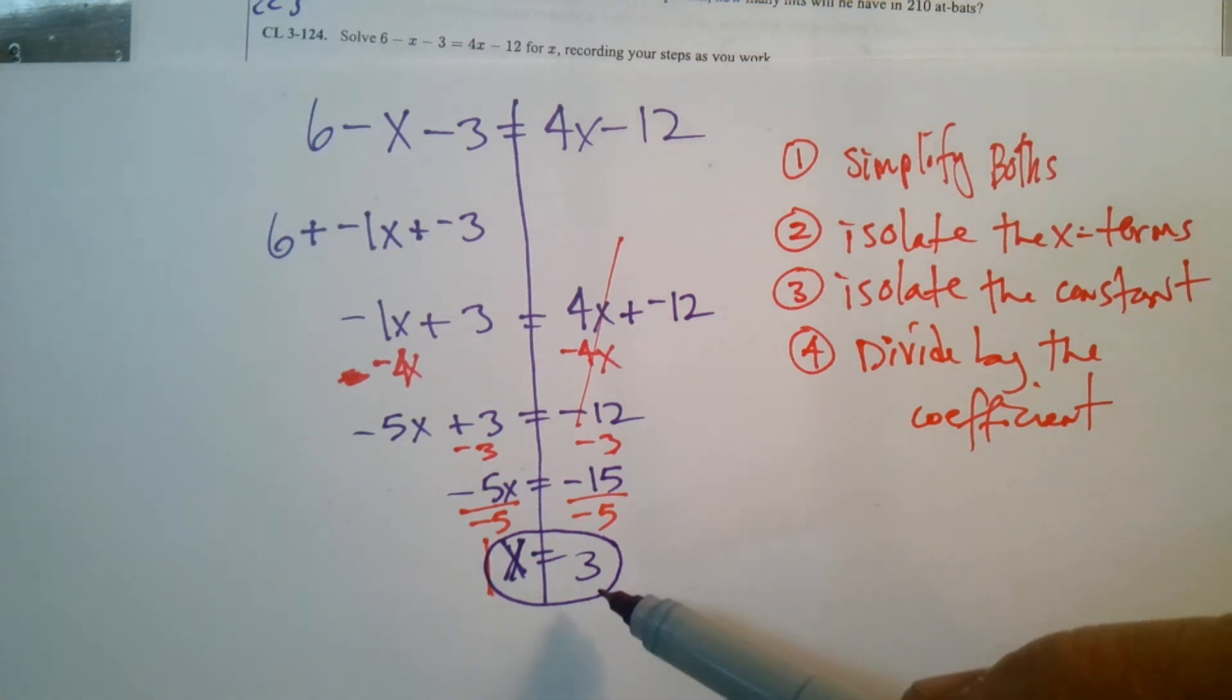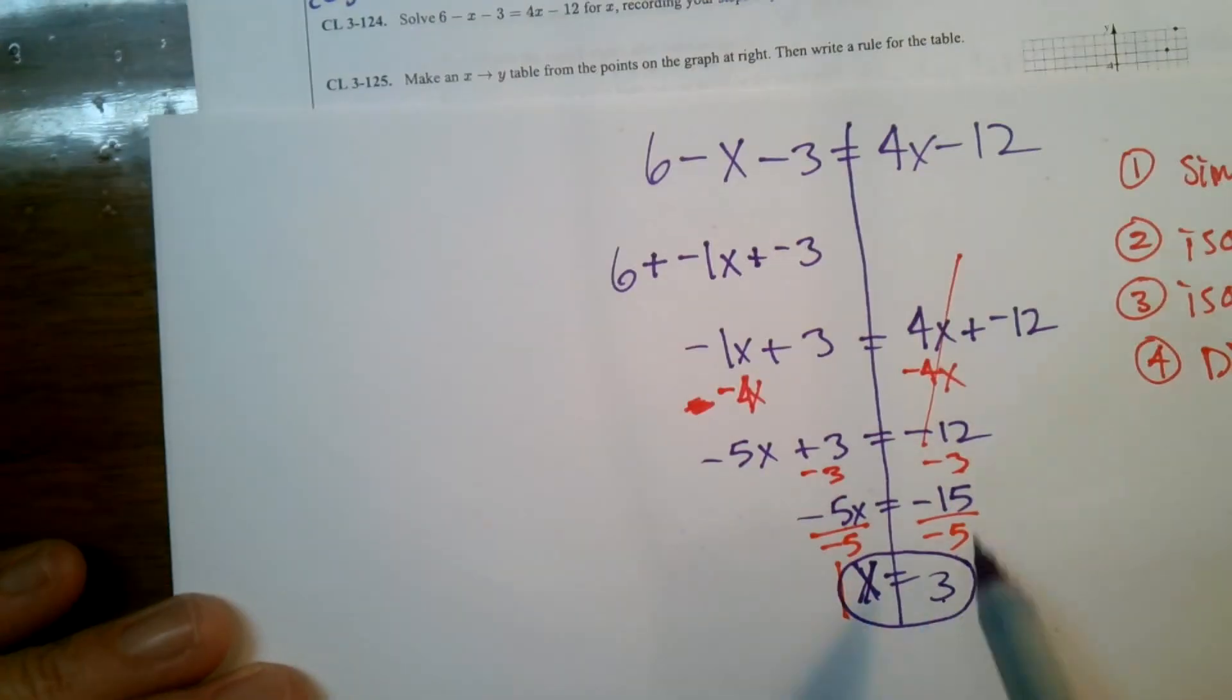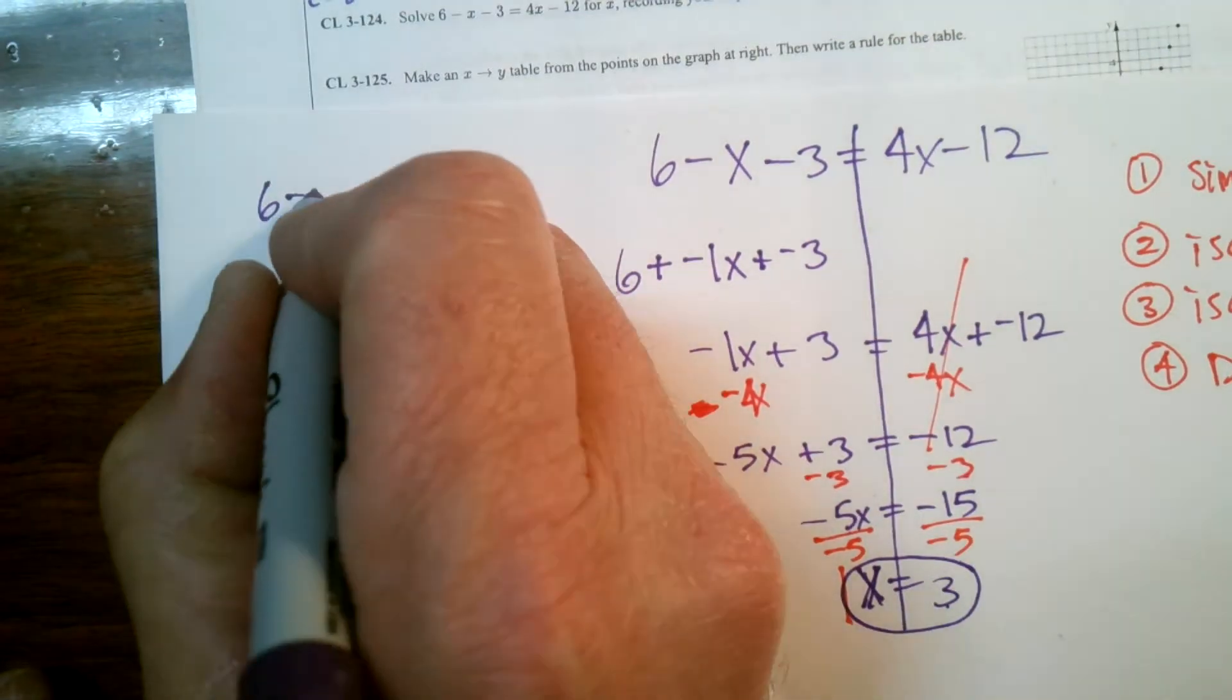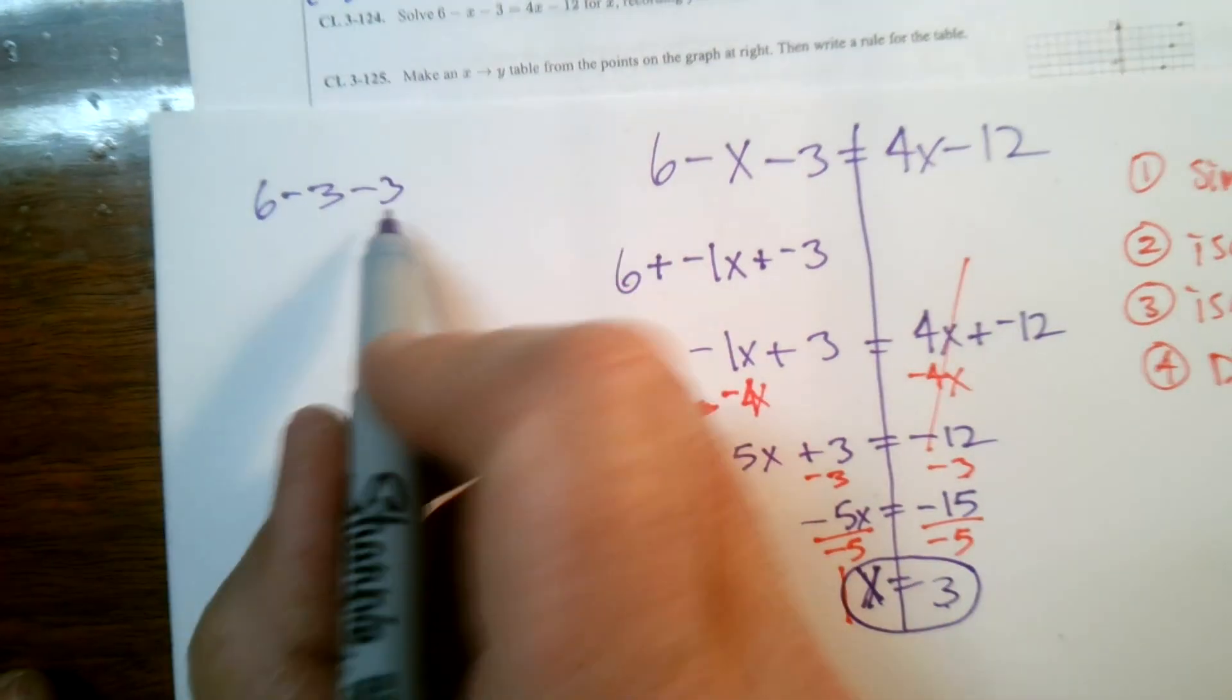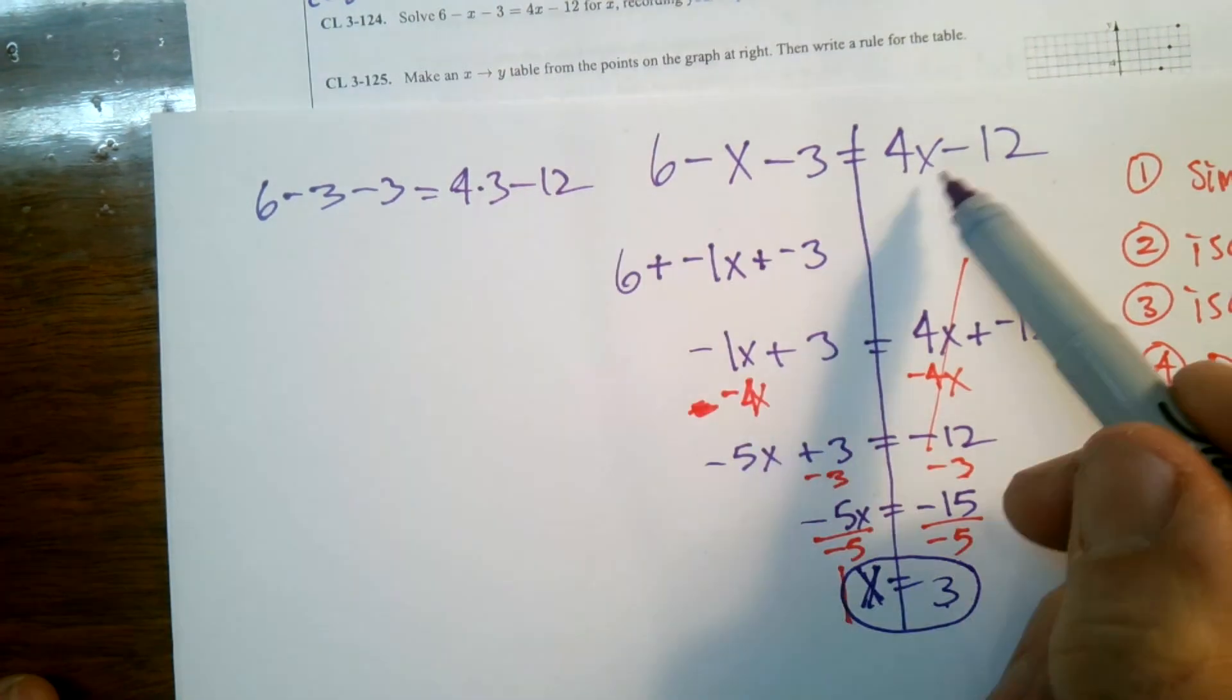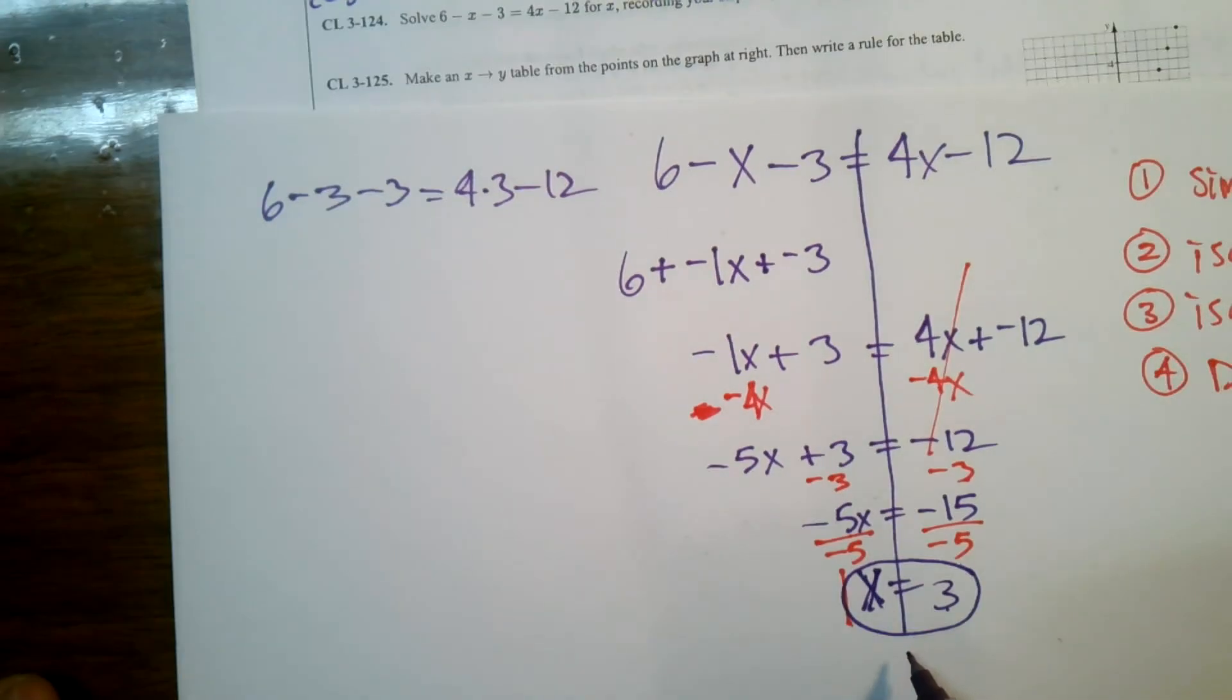And as I said in the beginning, how do I check to make sure I'm right? What I was looking for is, does that 3 make this equation true? If I were to put in place of the X a 3, so on one side I have 6 minus 3 minus 3, and on the other side I would have 4 times 3 minus 12. In place of that X, I'm putting the 3 that I just discovered I think X is. So let me check it. Is that true? Do I get a true statement now?